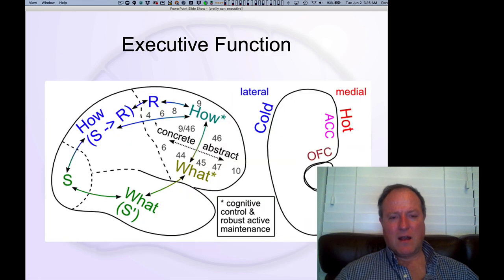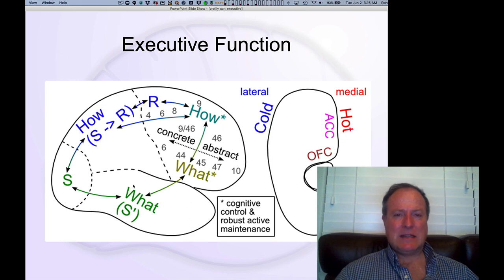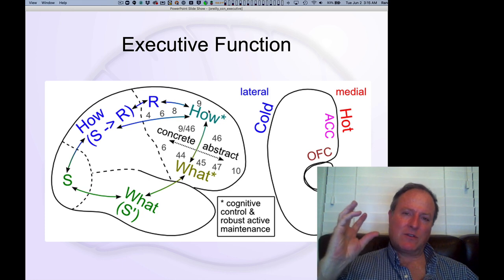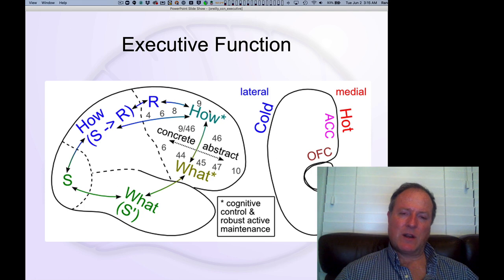Thinking about how the frontal cortex is organized into a similar kind of dorsal and ventral pathway that we see in posterior cortex, but now kind of concerned more for this kind of top-down executive control function, but still more separated in terms of the dorsal areas being important for motor control.